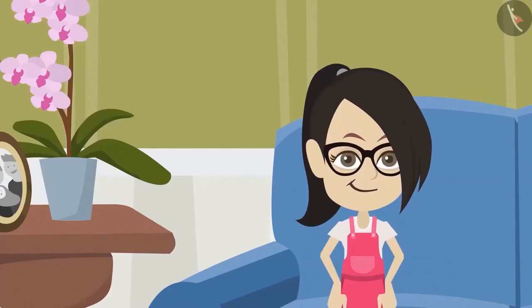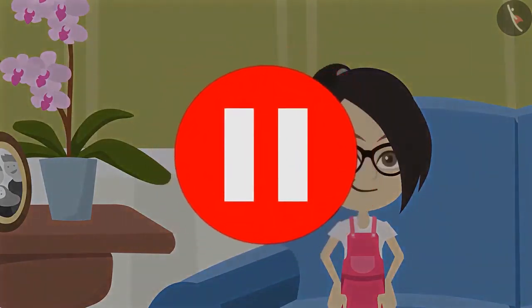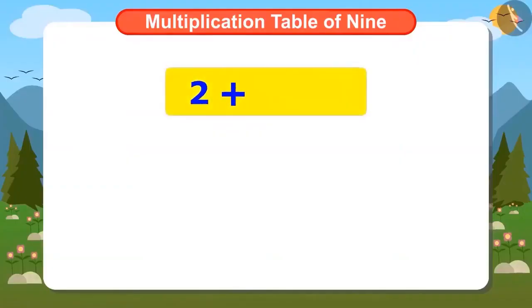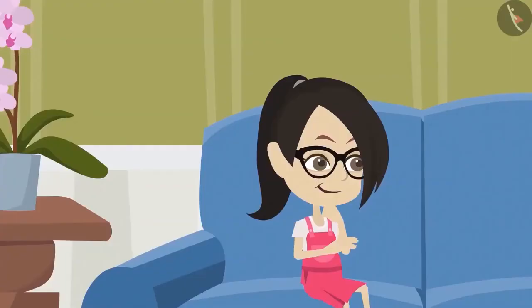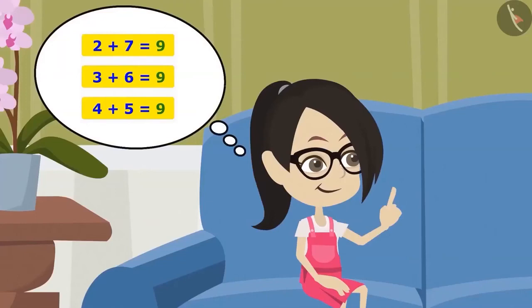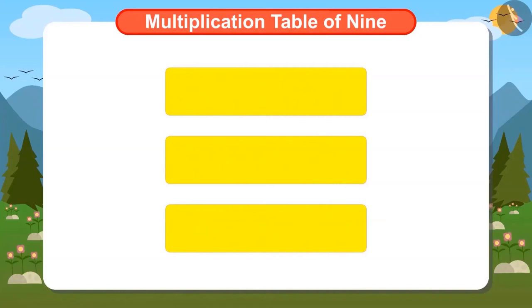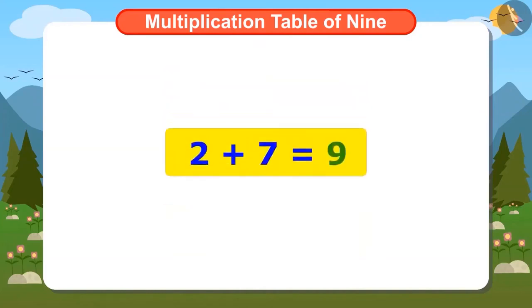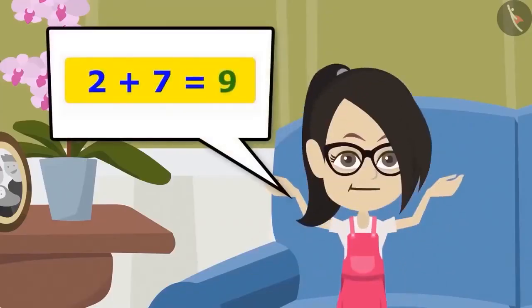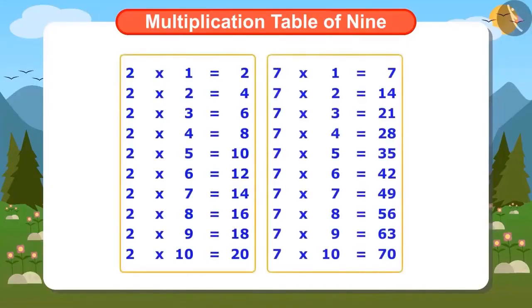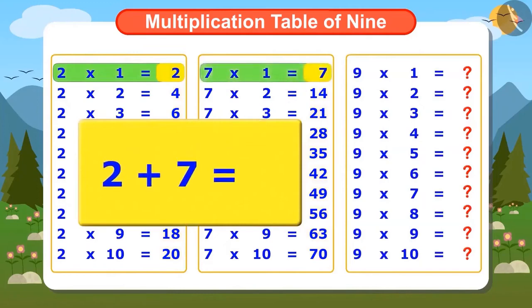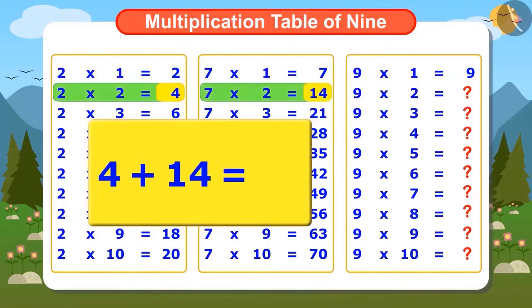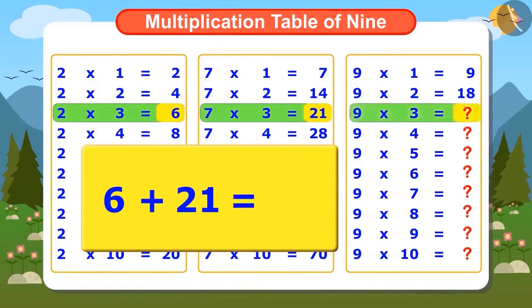To write the table of 9, I add the numbers of the small tables. Let me first find out which numbers add up to form 9. Adding 7 to 2, adding 6 to 3, adding 4 and 5 — we get 9. Vandana can choose any one of these groups. She chooses the table of 2 and 7. To find the multiplication table of 9, I write the tables of 2 and 7 first. By adding 2 and 7, the answer will be 9. By adding 4 and 14, we get 18. After adding 6 and 21, we get 27.